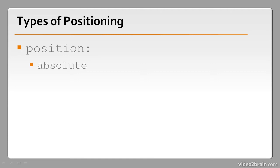Absolute positions an element accurately at specified offsets. Fixed is similar to absolute, except that the offsets are always in relation to the browser viewport. Relative shifts the element relative to its normal position. Static disables CSS positioning, and you're unlikely ever to need to use it.